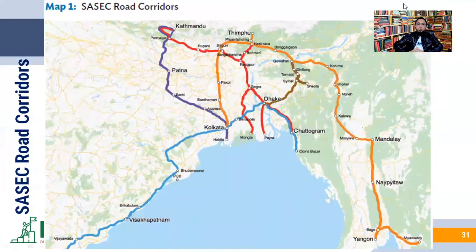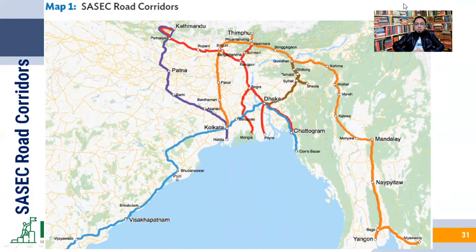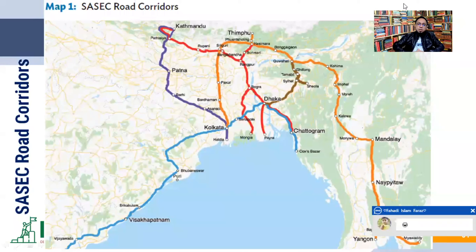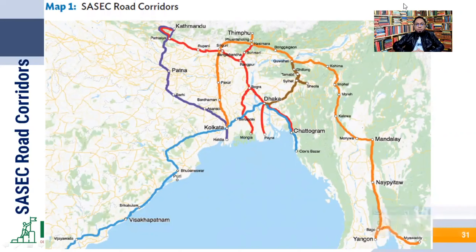Under SASEC road corridors, let us have a glance. On the screen, you can see the SASEC member countries' road connectivity projects. One project was initiated from Visakhapatnam in India, connecting Pune and Kolkata, then extending to Dhaka, Chittagong, and Cox's Bazar. Another road starts from Yangon, then Naypyidaw, then Mandalay, and enters India through Assam, Guwahati, crosses through the Chicken's Neck, and then enters India again at Siliguri and Pakur to reach Kolkata.